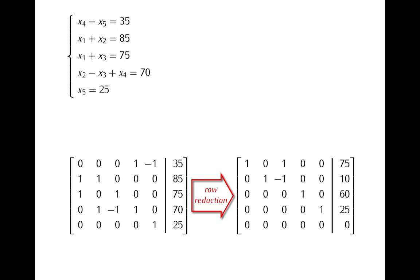In order to read the solutions of the system out of this reduced matrix let me label its columns with the corresponding variables. And now as you can see in this reduced matrix we don't have a leading one in the column of constants. So our system is consistent. And we also have no leading one in the column of x3. So x3 is a free variable.